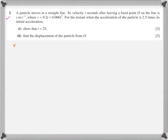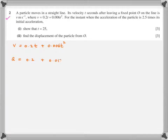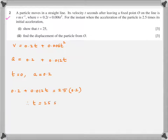Question two: a particle moves in a straight line and velocity is given by a certain expression. For the instant when the acceleration is 2.5 times its initial acceleration, show that t = 25 seconds. First, differentiate the velocity expression to get an expression for acceleration — it's a simple differentiation. At t = 0, initial acceleration comes out to be 0.2. Then take the acceleration equation and equate it to 2.5 × 0.2, and solve to get t = 25.